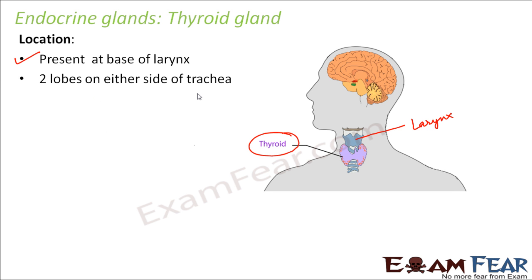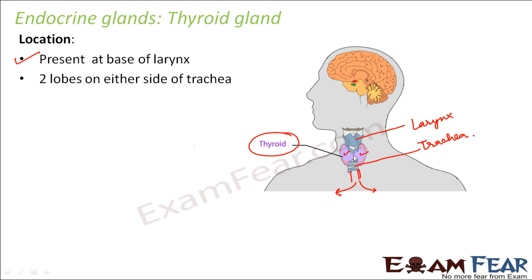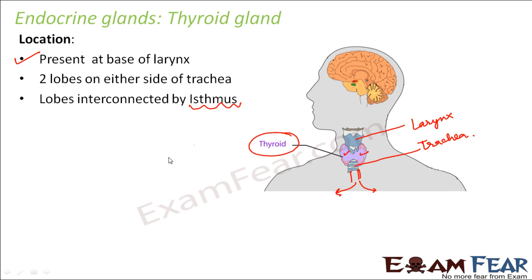The thyroid gland has two lobes on either side of the trachea, which is the windpipe. The trachea runs down and connects to the lungs. So the trachea is at the center, with one lobe on each side. These two lobes are connected by a tissue called the isthmus — a bridge made up of connective tissue connecting the two lobes of the thyroid gland.